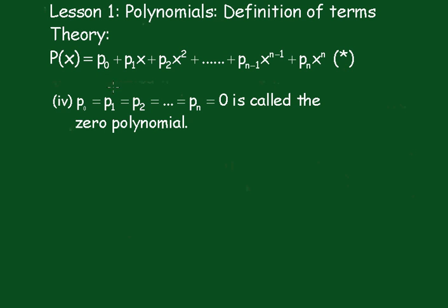Part 4: If p0 equals p1 equals p2 all the way along to pn equals 0, this is called the zero polynomial.